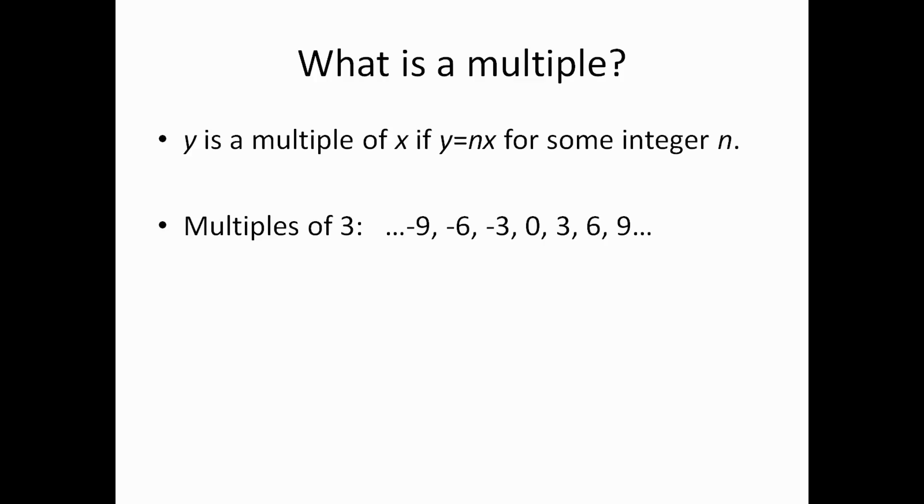0 is 3 times 0, and so on. Now, on the GMAT, typically we deal just with positive multiples of a number. So, that would just mean all the ones that are not negative or 0. So, that would, in this case, start with 3, go to 6, 9, 12, and go on forever.